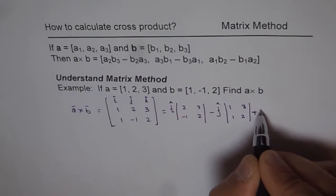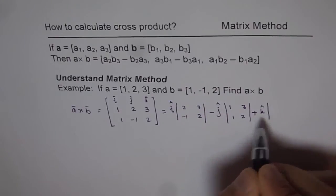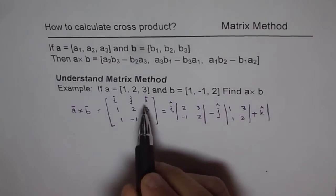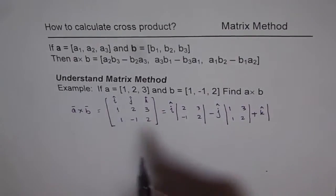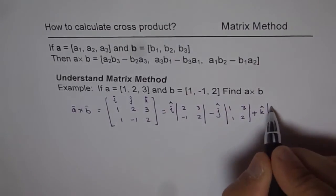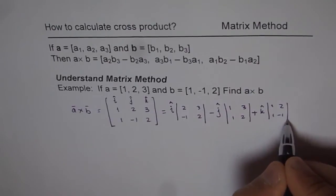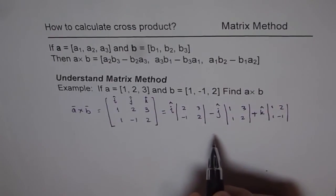And then write plus the vector k, and then again hide the k row and the k column. And you're left with 1, 2, 1, minus 1. So this is what you kind of get here.